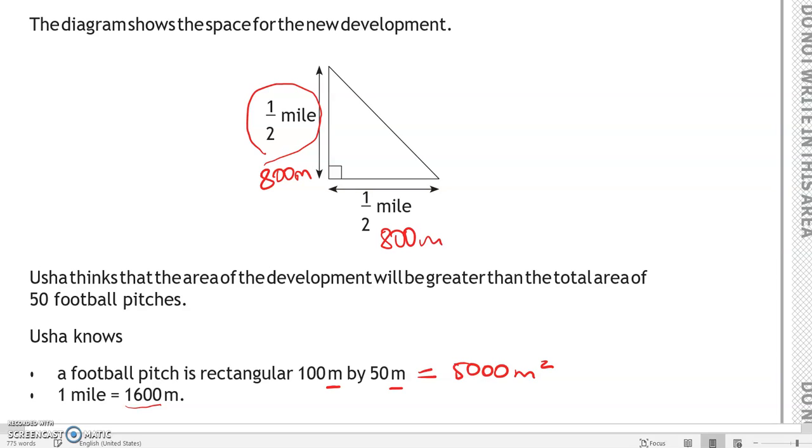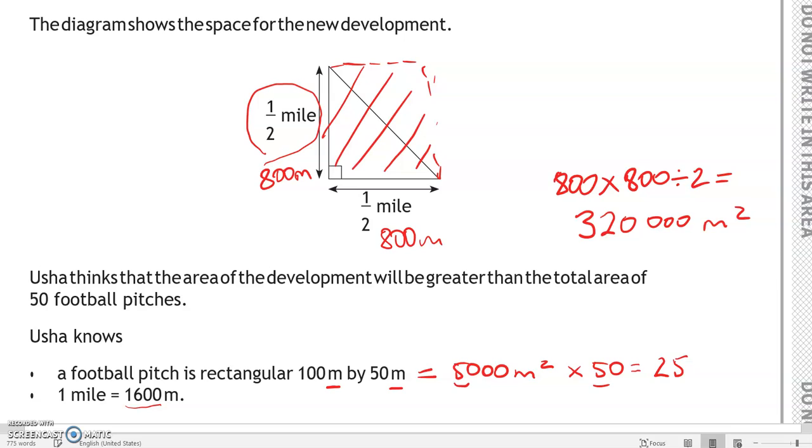So if we multiply 800 by 800, we'd be looking at this whole area. Then we'll divide it by 2 because this is the area of a triangle. So we'll go 800 times 800 divided by 2, and that is 320,000. So we're comparing this now to 50 lots of the 5,000. So we'll multiply this by 50. 5 times 5 is 25, add the rest of the zeros, so 250,000.